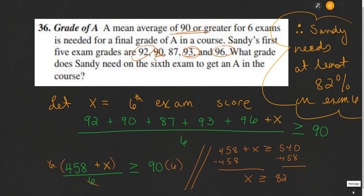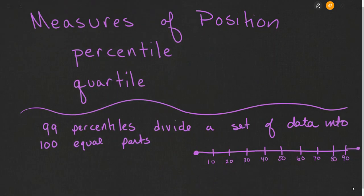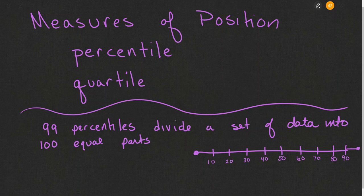Let's move on to measures of position. Measures of position are percentile and quartile. I'm going to stop the video here and encourage you to watch video number 2 for more information about these measures of position.